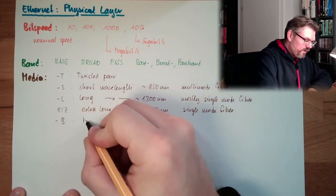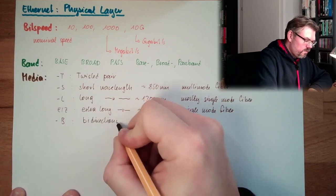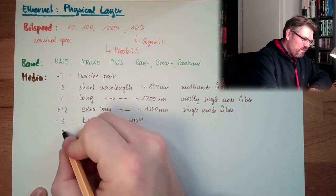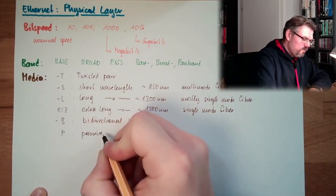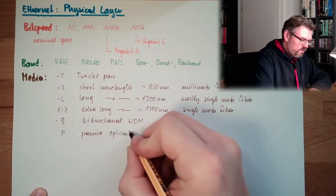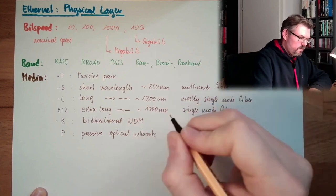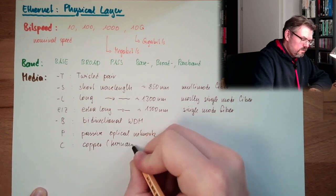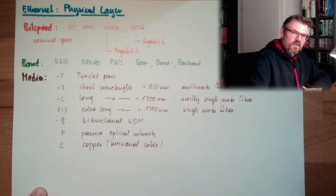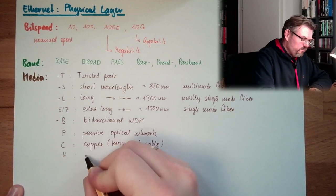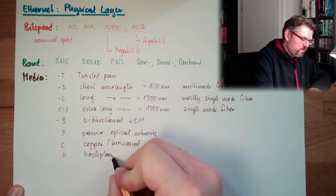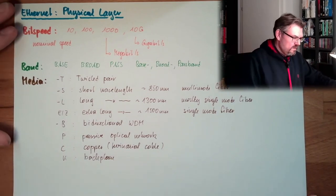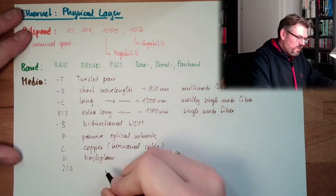Then it would be also fiber cable B, bidirectional wave division multiplex. Then there is a P, passive optical network. Then there would be a C, copper. Copper is called, this is a twin X cable. So there are two cores. Then K would be back plane.